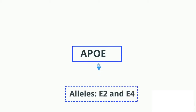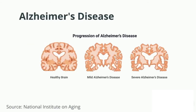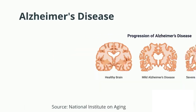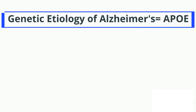Today we will look at the E2 and E4 alleles of the APOE gene and their association to Alzheimer's disease. Alzheimer's disease is a progressive disease, and the genetic variants of APOE an individual has is associated with the degree of Alzheimer's onset and progression. This makes medical genetics very useful, since you can find out a patient's approximate risk of developing Alzheimer's with their alleles.